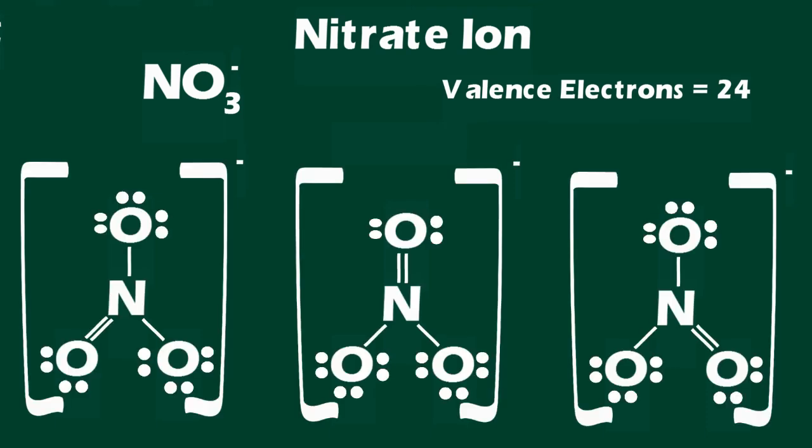There are three accurate and equivalent Lewis structures that can be drawn for this molecule. The way to represent multiple correct Lewis structures is to draw all of the correct structures with a double-headed arrow between them. The term resonance is used to describe this phenomenon of having multiple equivalent Lewis structures for a single molecule.